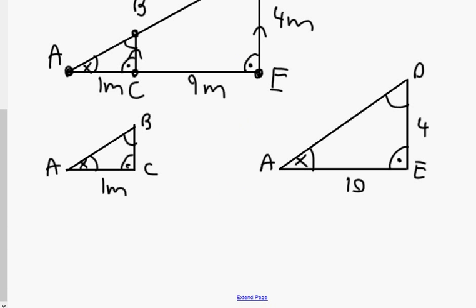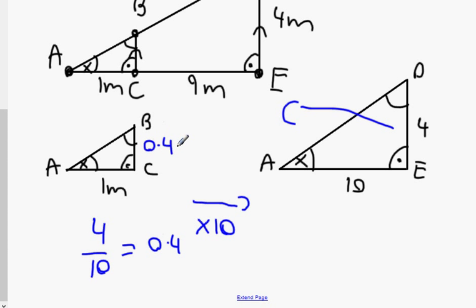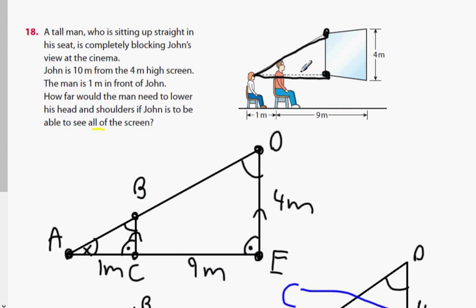Now, how much bigger is the triangle on the right than the triangle on the left? The length is 10 times bigger, which means that 4 should be 10 times smaller when it is BC. So 4 divided by 10? 0.4 meters. This is 0.4 meters. The man will have to lower his head 0.4 meters down to here so that John can see all the screen.